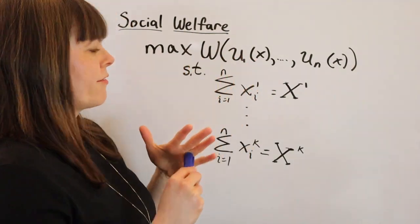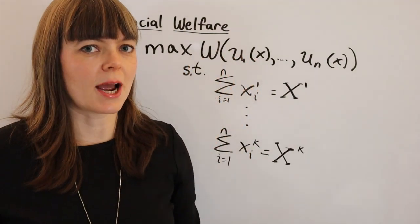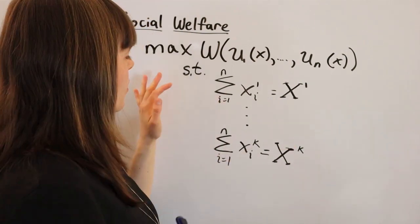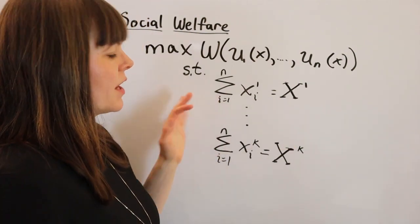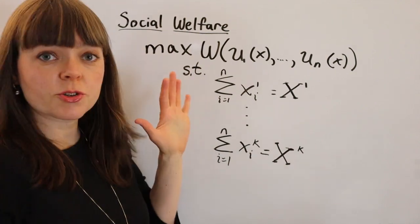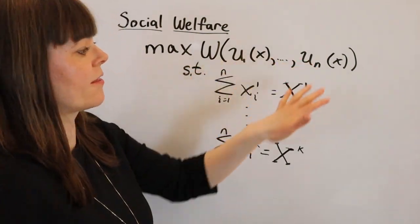I'm going over the social welfare function from Hal Varian's chapter on social welfare. This is in one of the sections of that chapter. You have a social welfare function that looks something like this.